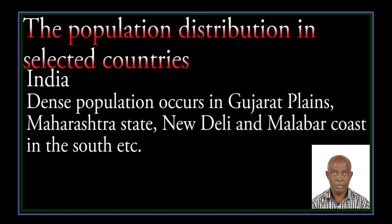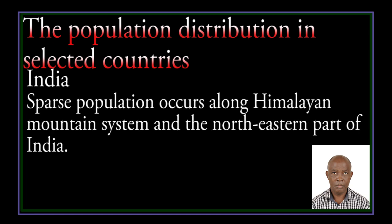In India, the dense population occurs in the Gujarat Plain, Maharashtra, New Delhi, and the Malabar Coast in the south. Sparse population occurs along the Himalayan mountain system and the northeastern part of India.